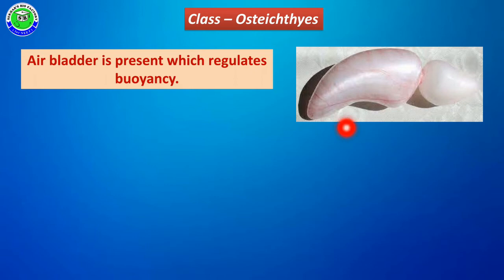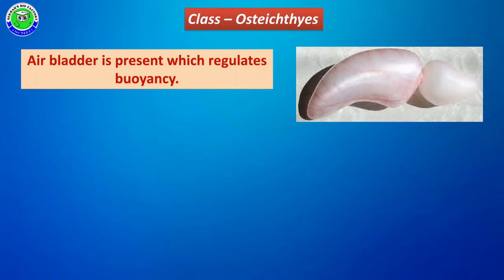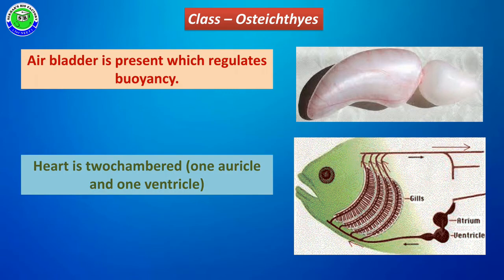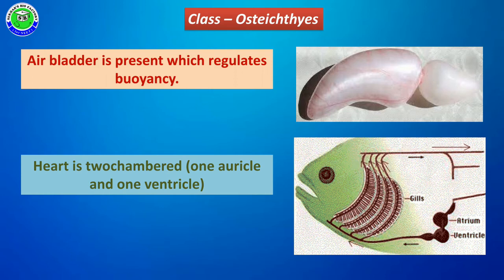One more important feature of Osteichthyes: inside their body there is an air bladder. This air bladder helps the fishes to float and assists in buoyancy. These members also have a heart with two chambers — one called the auricle and another called the ventricle. The presence of a two-chambered heart is a fundamental character of fishes.